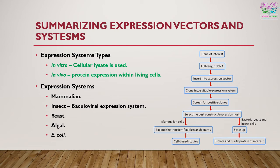There are two types of expression systems. The first is in vitro, in which expression vectors are used to express protein by utilizing cellular lysate. The second is in vivo, in which expression vectors are transformed into living cells and protein is synthesized within the cell. Several expression systems exist, including mammalian, insect or baculoviral expression systems, yeast systems, algal systems, and E. coli or prokaryotic systems.